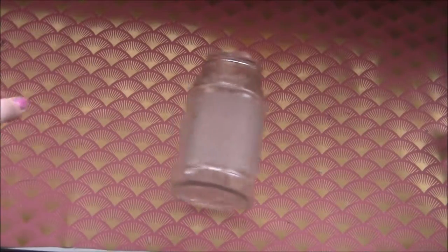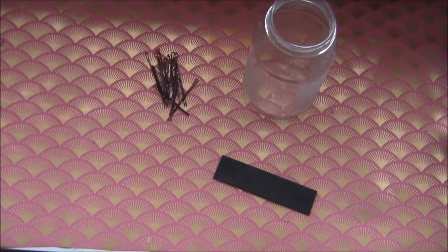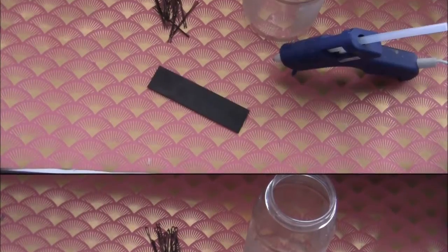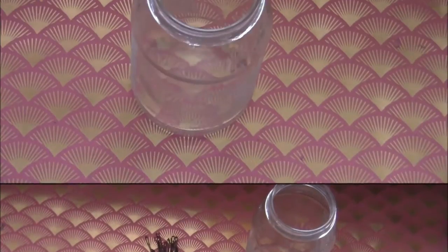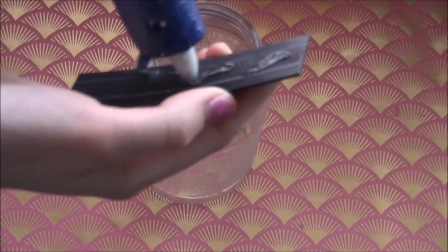To make this bobby pin organizer, you will need an old jam jar, a magnetic strip, and some bobby pins. You will also need some hot glue. All you have to do is hot glue your magnetic strip onto the jam jar.